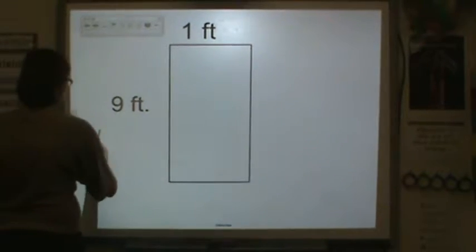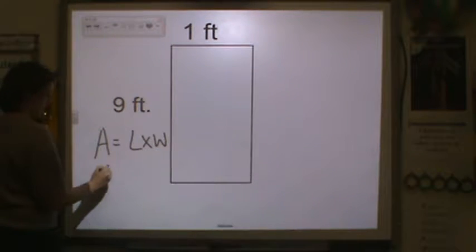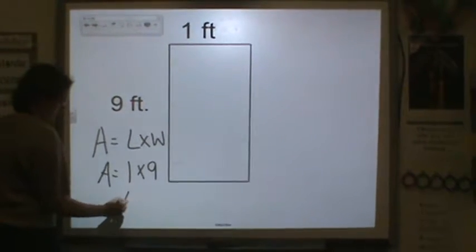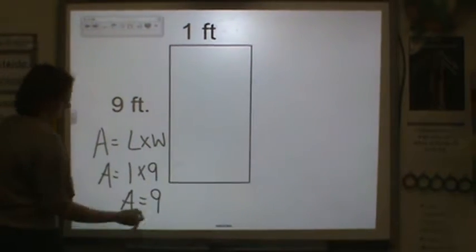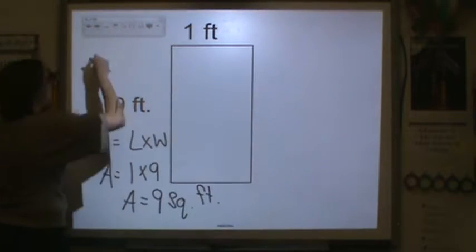Next, remember, area is equal to length times width. The length is 1. The width is 9. So the area is equal to 9. My unit is feet. Since I'm doing area, it is square feet.